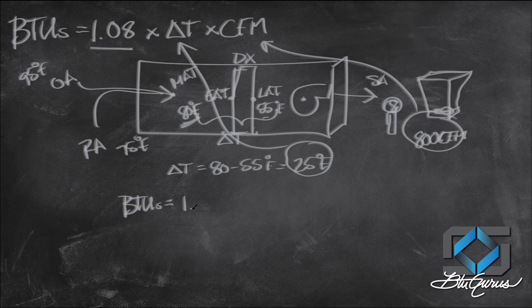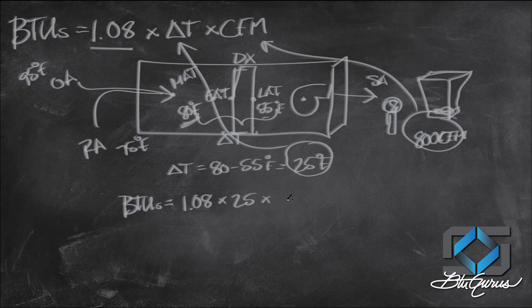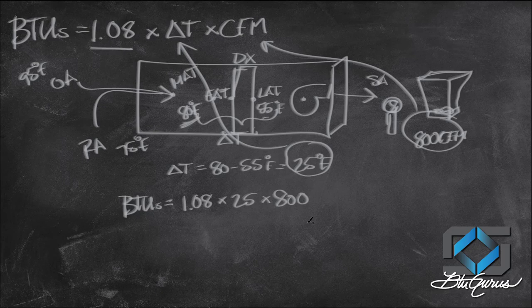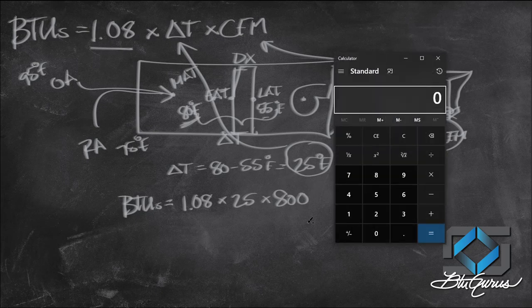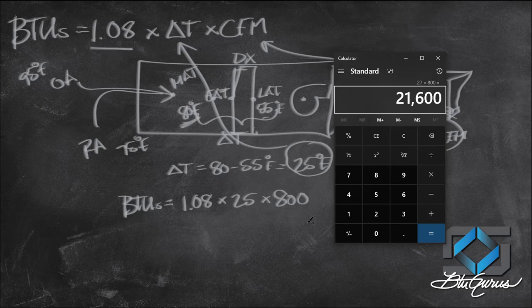It equals 1.08 multiply that by 25 degrees delta T, and I multiply that by 800 CFM. To follow along with that, let me open up my calculator. 1.08 times 25 times 800.